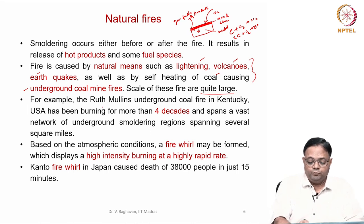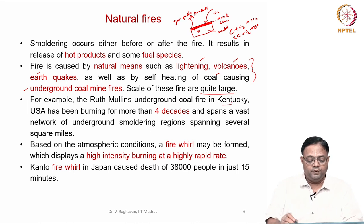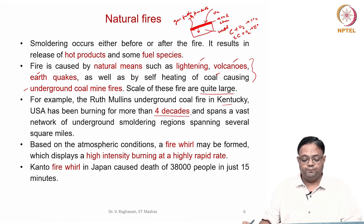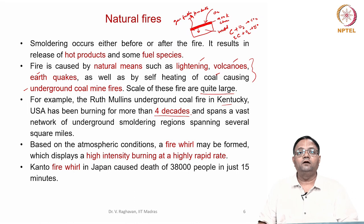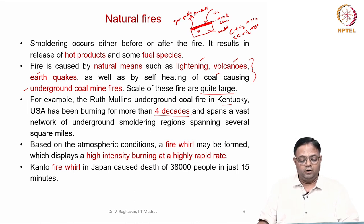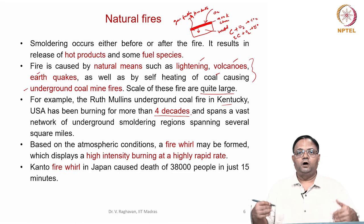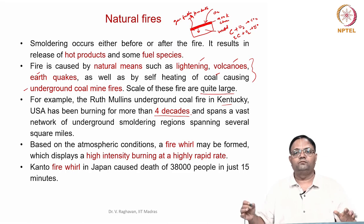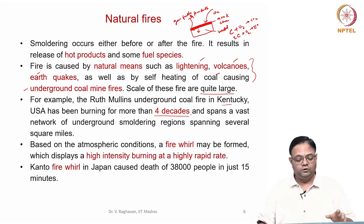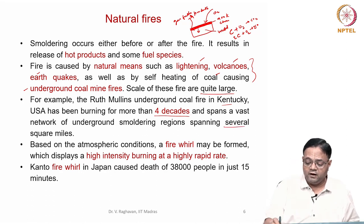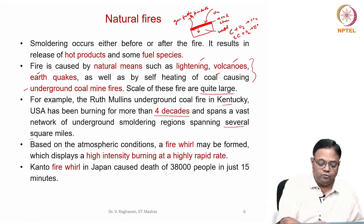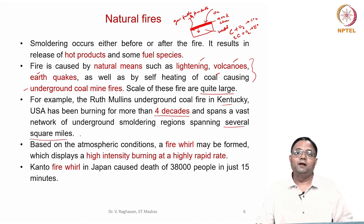One example is the Ruth Bullens underground coal fire in the USA, which has been burning for more than 40 years — four decades — with continuous underground smoldering and fires evolving products. The area involved is several square miles.